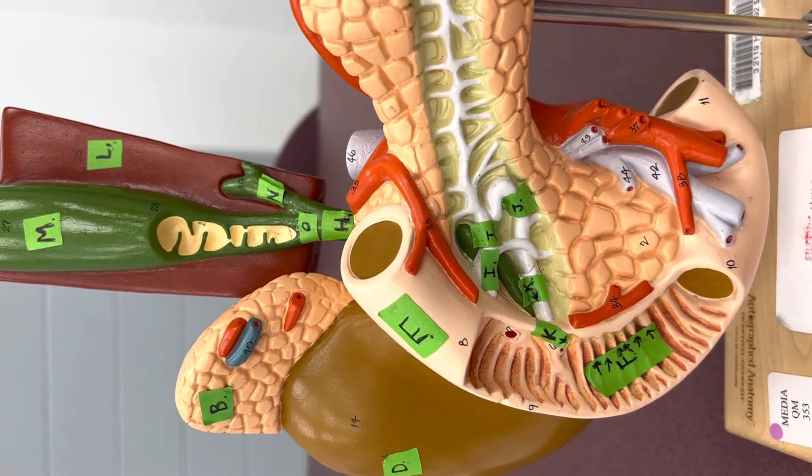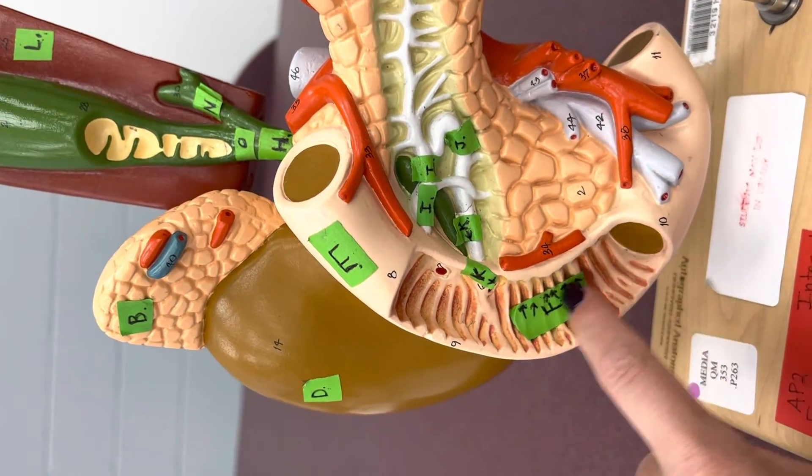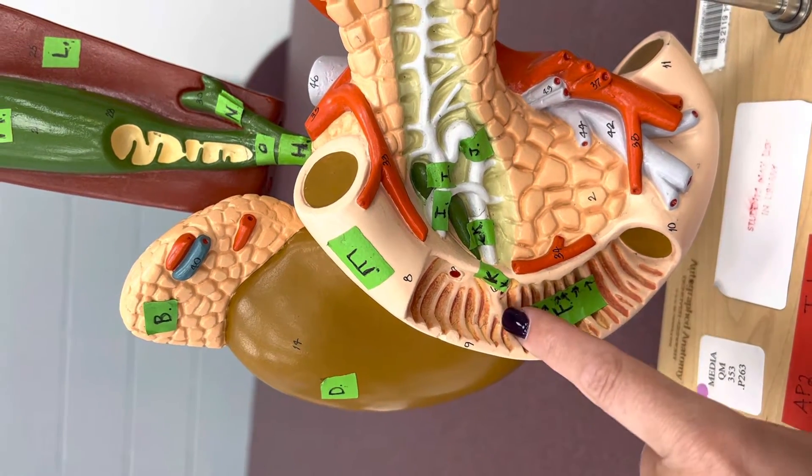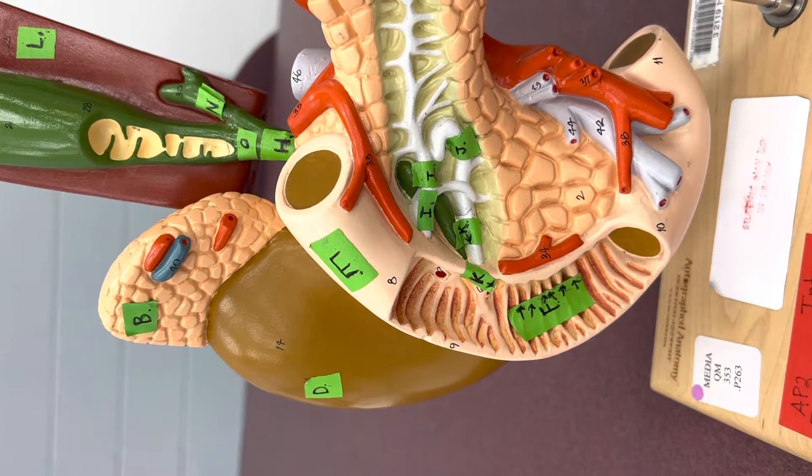The folds in the small intestine, these are called the plicae circularis. These are just circular folds.